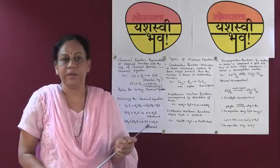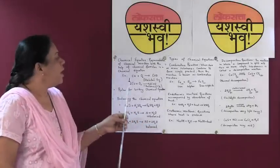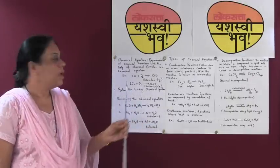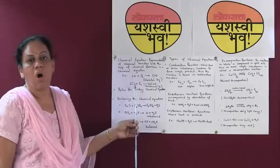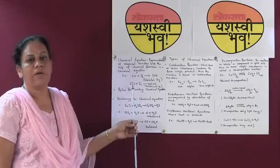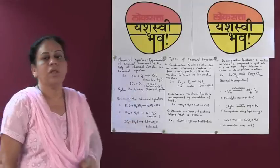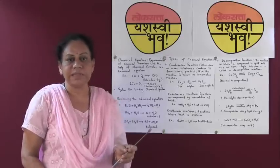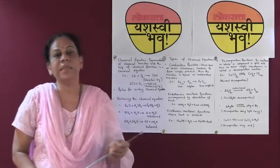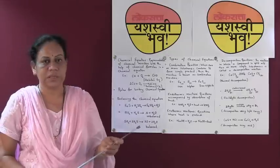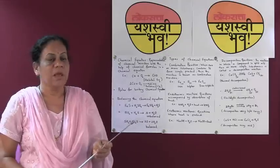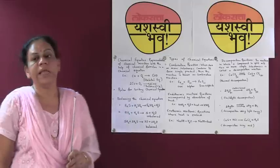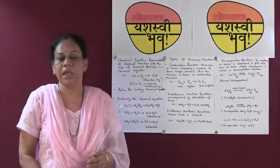Though it is not complete, here we may balance the equation so that the number of atoms on the left hand side will be equal to the number of atoms on the right hand side. We will learn about balancing chemical equations later. Before that, let us study what are the rules for writing chemical equations.